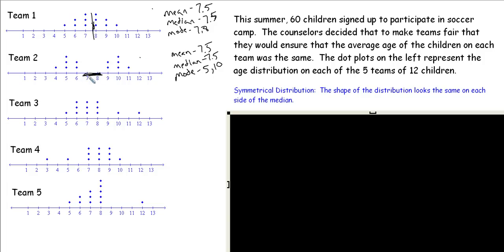This distribution kind of looks like two mountains with a valley in between. This area of blanks here, we call this a gap. We have a gap in our data. And since we have two peaks to our distribution, this would be a bimodal distribution.